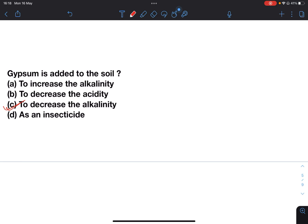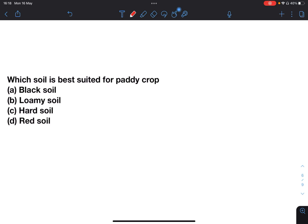Next: Which soil is best suited for paddy crop? Black soil, loamy soil, hard soil, or red soil. Paddy crops need water for a longer period of time, so the soil which retains moisture will be best for paddy crop. So answer will be B, loamy soil.